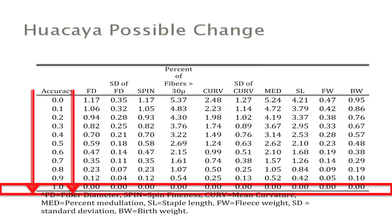We can calculate a 67% confidence interval using possible change. Take an animal with a minus 1.1 fiber diameter EPD and an accuracy of .65 — round up to .7. At accuracy .7, the possible change for fiber diameter is .35. You add and subtract that value to get the range. With 67% confidence, that animal's true genetic merit falls between negative 1.45 and negative .75. You can construct a 95% interval by multiplying possible change times 2. But really, all we need to worry about is that accuracy value.